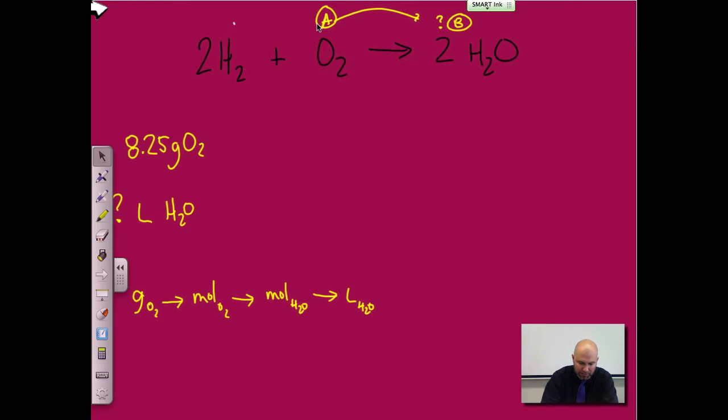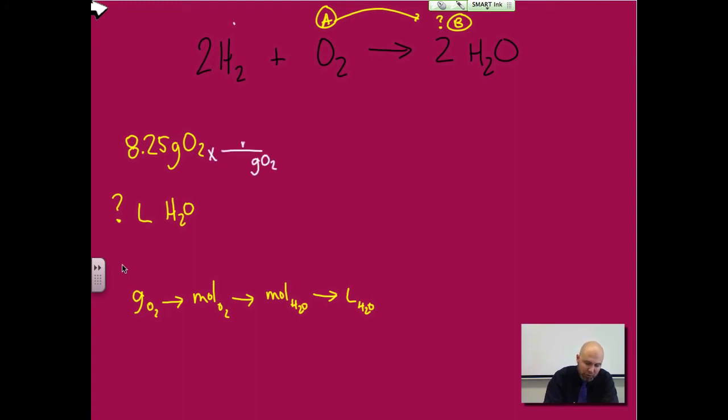Here we go. Grams of O2 to moles O2, 1 over 32, which is what it is for oxygen. Why? Because oxygen is 16 and there are two of them, so it's 32. So 8.25 divided by 32, I got 0.26 moles of O2. So I'm here now.